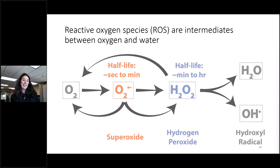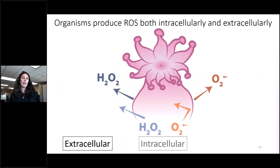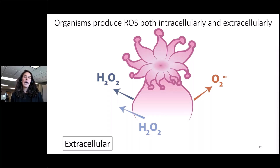As indicated by their name, ROS are really reactive with many different compounds, and therefore have a very short half-life. For example, superoxide can persist on the order of seconds to minutes, whereas hydrogen peroxide can last on the order of minutes to hours. This is a depiction of a coral polyp — ROS can be produced both intracellularly or extracellularly. Superoxide, indicated in orange, cannot pass through biological membranes, so in this talk we focus on extracellular superoxide, meaning its origin is from outside the organism.